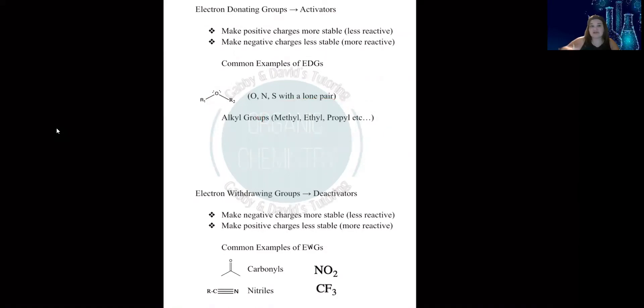Now, methyls, ethyls, propyls, carbon chains—they don't have lone pairs. So how exactly do they donate? That's the question. How do they give electrons? Well, you're familiar with carbocations, right? We know that a tertiary carbocation is more stable than a secondary carbocation.